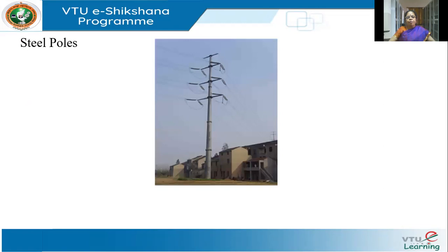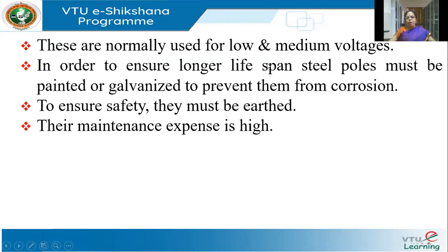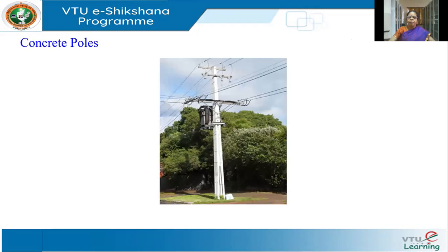Steel poles are very familiar. You might have two circuits — going two circuits. They are normally used for low and medium voltages. To ensure longer lifespan, the steel poles are galvanized — that means you have a coating of zinc to prevent corrosion. Galvanization is a very common technique of coating steel to prevent corrosion. They must be earthed, which is very important for safety. Their maintenance expense is high and they have to be periodically maintained.